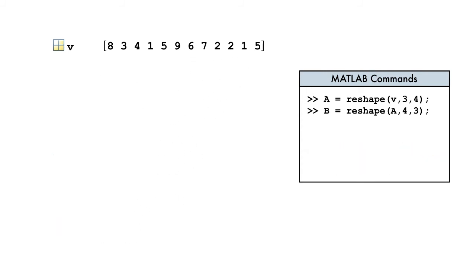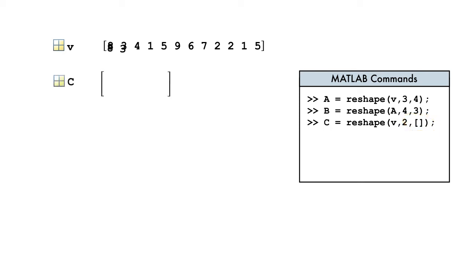If we know we want two rows, we could do a bit of math to see how many columns that would be, or we can leave one dimension unspecified by passing square brackets to the function. The resulting matrix contains the correct dimensions required to reshape the array while maintaining the same number of elements.